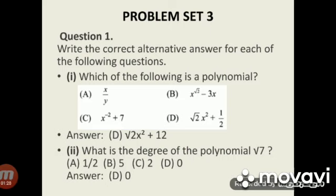Subdivision 1: Which of the following is a polynomial? The correct answer is option D, root 2 x squared plus 12, because the degree of x is a whole number. Subdivision 2: What is the degree of the polynomial root 7? Root 7 can be written as root 7 into x raised to 0, taking the variable x.